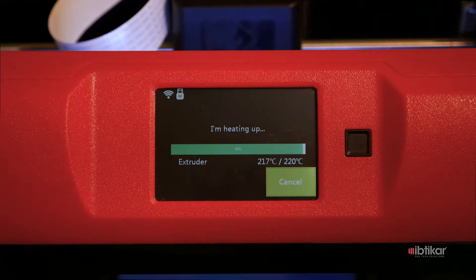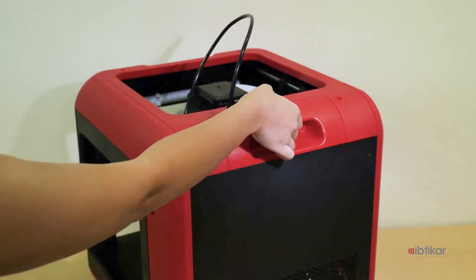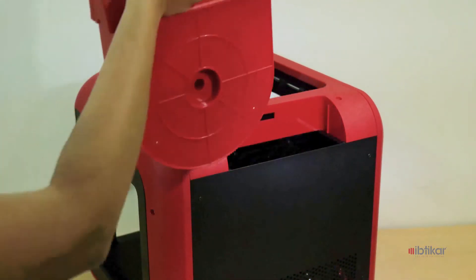Push the black clip towards the back of the printer and lift the filament cartridge up and place it on the table.